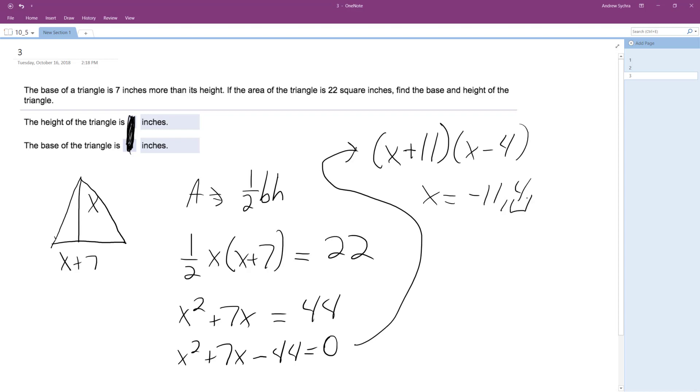So we'll start with this one. So height is going to be 4 inches. And then the base is going to be equal to 11 because 7 plus 4 is equal to 11. So 11 times 4 is 44, but because it's a triangle, half of that is equal to 22.